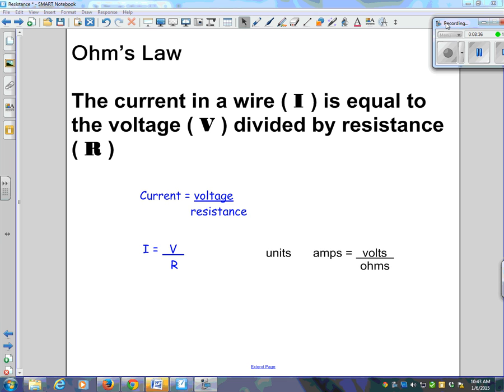Ohm's Law: the current in a wire, I, is equal to the voltage, V, divided by the resistance, R. There it is in words, there it is in letters, and there it is in units.